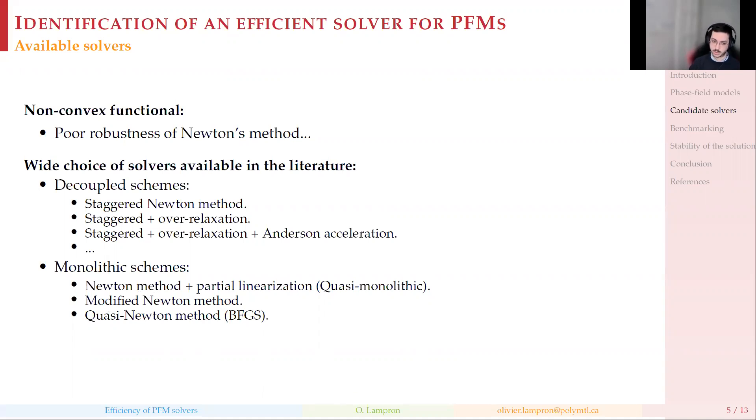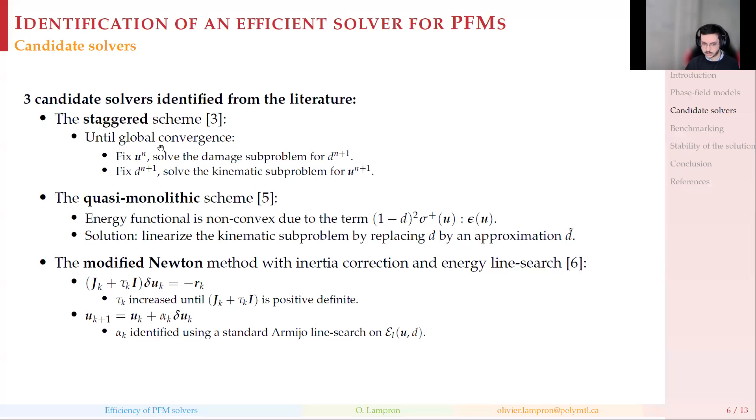In a preliminary study, I implemented almost all of these solvers. But in the end, we chose three. As a reference solver, we chose the staggered solver, which we know is slow but robust. About 95% of the literature is using it. You fix u, solve for the damage, then using your new damage, you solve for u, and repeat alternatively until global convergence. The second solver is surprising because when the author presented this solver, he got really good results, but for unknown reasons, nobody in the literature except him is using it. So we decided to try it.